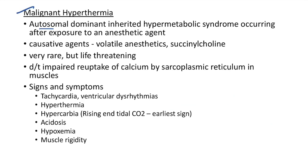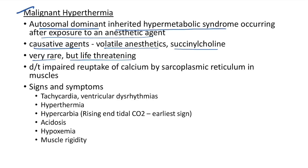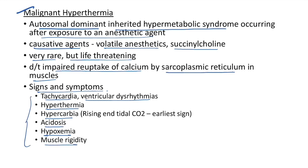Now let us see about malignant hyperthermia. It is an autosomal dominant inherited hypermetabolic syndrome occurring after exposure to an anesthetic agent. The causative agents are volatile anesthetics and succinylcholine. It is very rare but life-threatening. It is due to impaired reuptake of calcium by the sarcoplasmic reticulum in muscles.